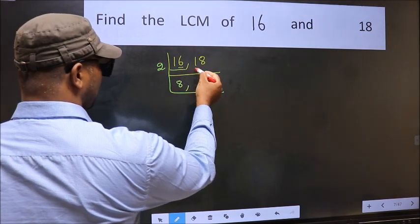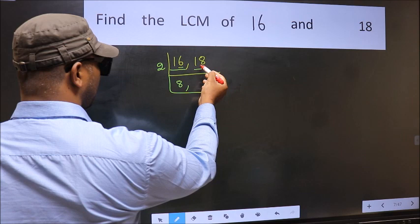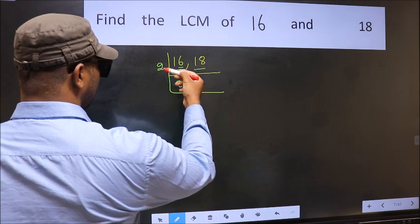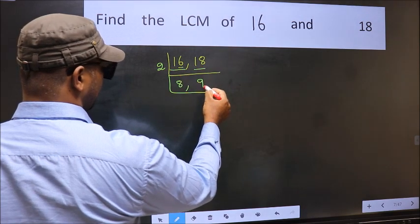Now the other number is 18. When do we get 18 in the 2 table? 2 nines are 18.